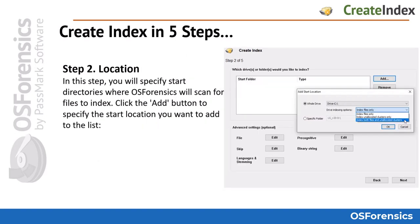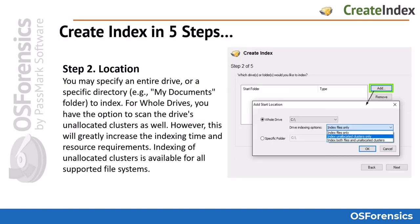In step two, you will choose which device in the case — such as an added disk or forensic image file, or even a particular directory — that you wish to index. You will also be given the options to index files only, index unallocated space only (all data outside of the file system), or choose to index both files and the unallocated space to index the entire disk.